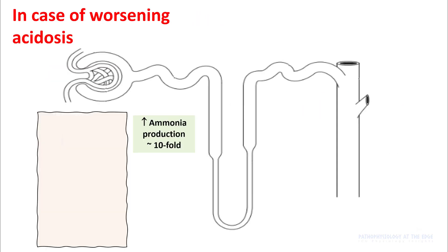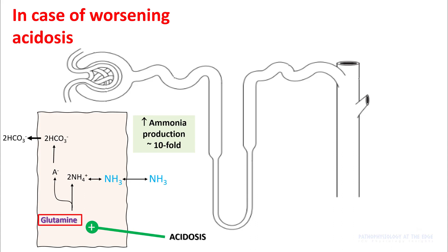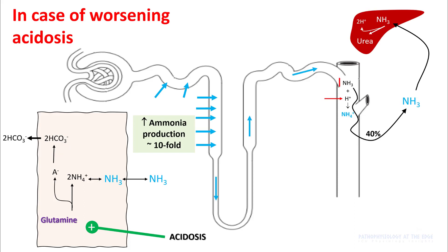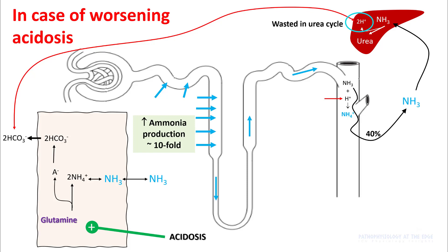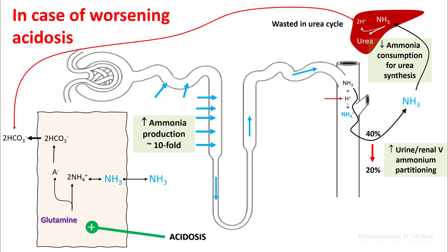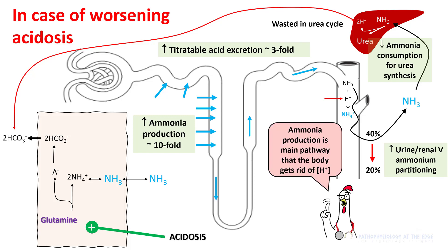If you have worsening acidosis, your body can increase ammonia production by tenfold. Ammonia is obtained from the amino acid glutamine, which forms two bicarb and ammonia. The bicarb is reabsorbed and helps with bicarb regeneration. The ammonia produced makes its way to the distal convoluted tubule where it combines with hydrogen ions to form ammonium ions, which are trapped inside the tubules and excreted. Around 40% of ammonia is reabsorbed and goes into the urea cycle, generating two hydrogen ions — which is wasteful, as those hydrogen ions consume the bicarb generated in the first place. So the kidneys increase urine ammonium partitioning to decrease ammonia reabsorption from 40% to 20%, decrease ammonia consumption for urea synthesis, and increase titratable acid excretion about threefold. Ammonia production is the main pathway your body uses to get rid of hydrogen ions.